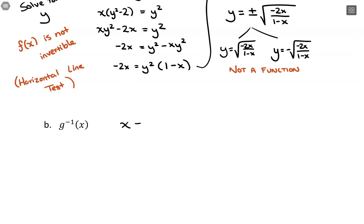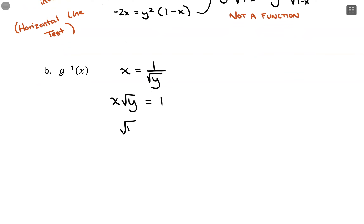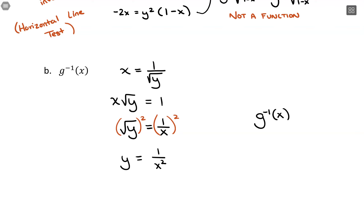Setting it up: x = 1/√y, just flipping the notation. Now solve for y: multiply both sides by √y, giving x√y = 1. Divide by x: √y = 1/x. Then square both sides to get rid of the square root: y = 1/x². That right there is our inverse function — 1/x².